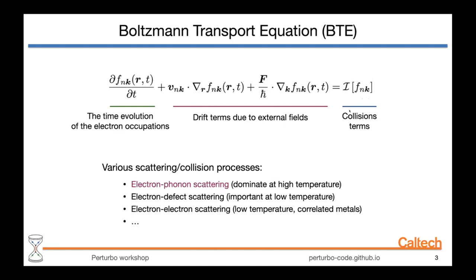There are several terms involved in the BTE. On the left side we have df/dt, the explicit time evolution of the electronic occupations, and then the drift terms due to external fields or thermal gradients. On the right side, we have changes in occupation characterized by scattering processes — such as electron-phonon scattering, which is the main focus of this work and dominates at high temperatures. Additionally, there can be electron-defect or electron-electron scattering, more important at low temperatures and for correlated systems.